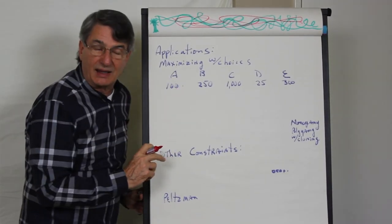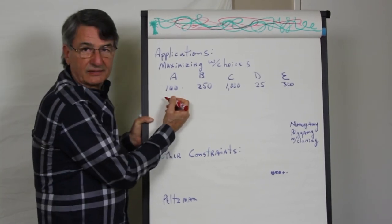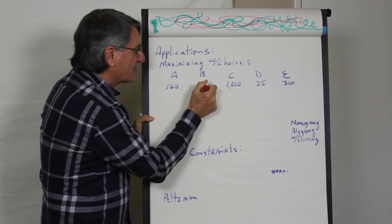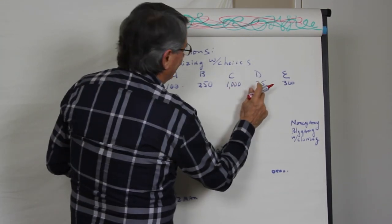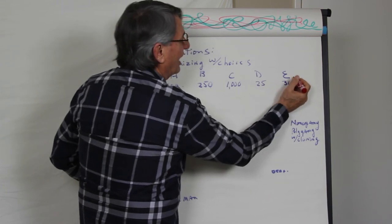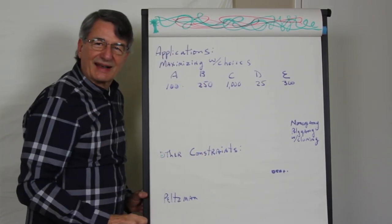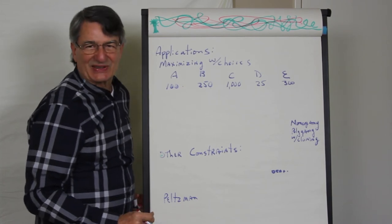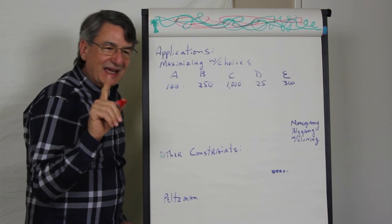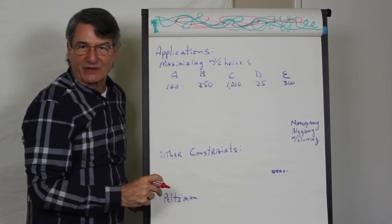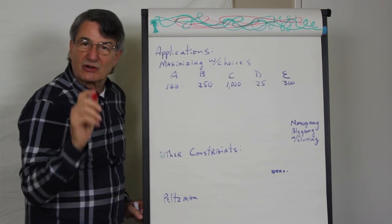Alice would give you 100 utels a day. Bertha — 250 a day. Candy — 1,000 utels a day. Delta — 25 a day. And Ethyl — 300 utels a day. So which would you choose? If you just go with benefits and pick Candy, you will make divorce lawyers even richer, because there are marginal costs too, not just marginal benefits.